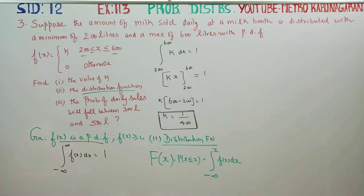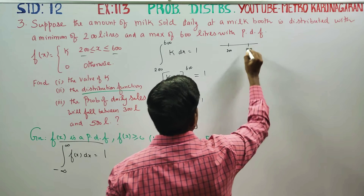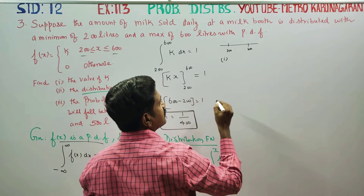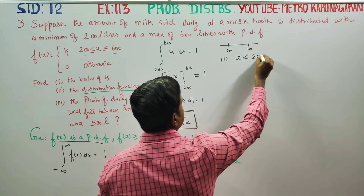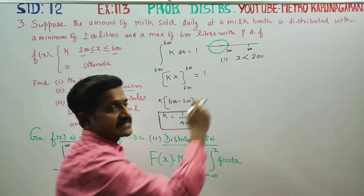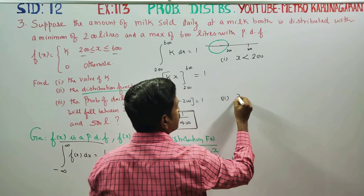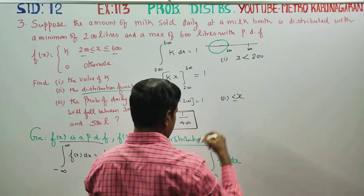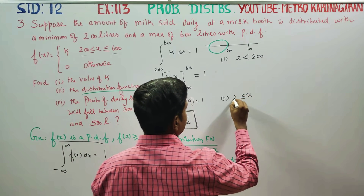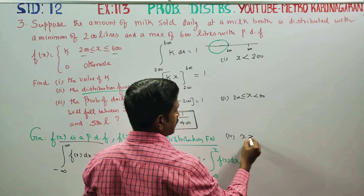The interval starts at 200 and goes up to 600. For the cumulative distribution function, we define three intervals: first, x less than 200; second, 200 less than or equal to x less than or equal to 600; third, x greater than or equal to 600.